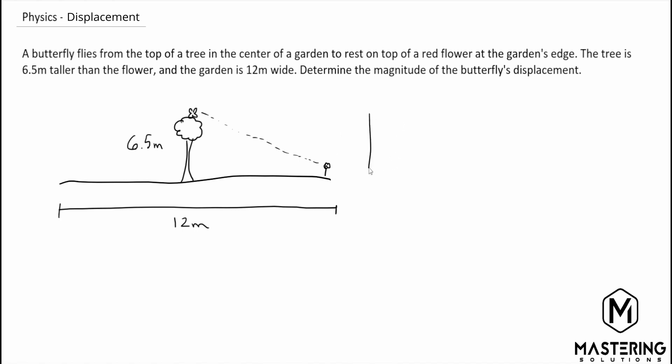So if we redraw this picture as a triangle we have 6.5 meters and then be careful don't put 12 for the bottom of the triangle. They're trying to trap you with that because they say it's in the center of the garden and the whole garden is 12 meters wide.